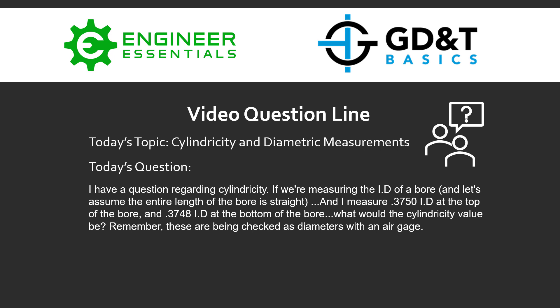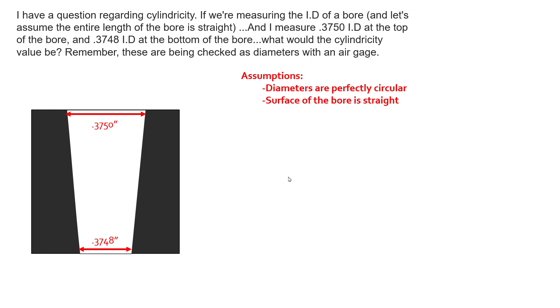Let's take a look at this and see what the answer is. So here we see a simple bore. The top of that bore measures at 0.3750, and the bottom tapers down to 0.3748. So we have a difference between the two diameters of 2 tenths of a thousandth. And again, we have to make a couple of assumptions. The first assumption being diameters are perfectly circular. And the other assumption is the surface of the bore is perfectly straight.